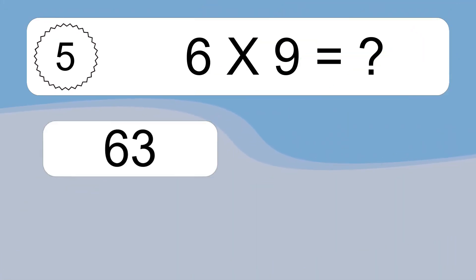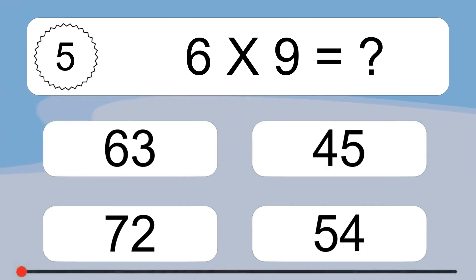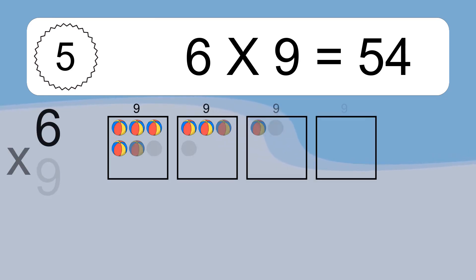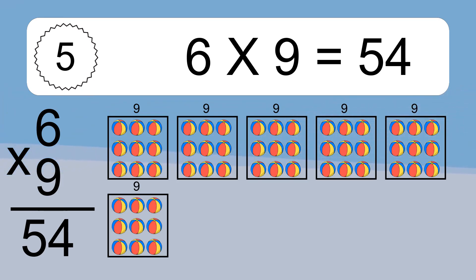6 x 9 equals what? 6 x 9 equals 54. We have 6 boxes, and each box has 9 colorful balls inside. If you count all the balls in all the boxes together, you will have 6 x 9 balls. This equals 54 balls.